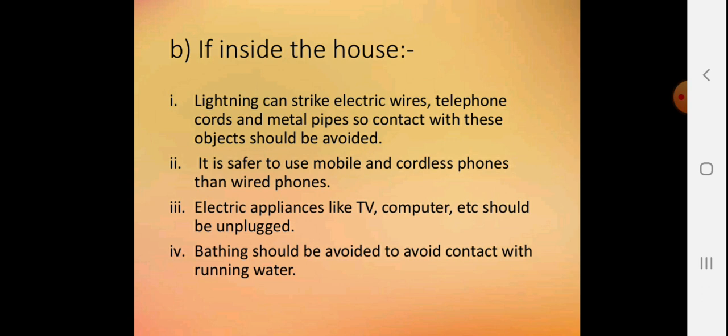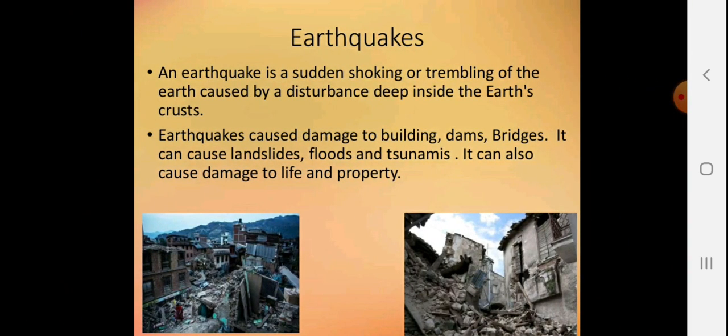If you are inside the house, lightning can strike electric wires, telephone cords, and metal pipes. Contact with these objects should be avoided. It is safer to use mobile and cordless phones than wired phones. Electric appliances like TV, computer, etc. should be unplugged. Bathing should be avoided to avoid contact with running water.